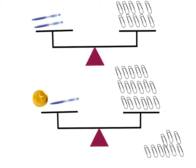So we couldn't just take, say, half of the paperclips and assign it to a coin and half of the paperclips and assign it to a pen — it just doesn't work that way. So instead we have to solve the first pan balance up here first.